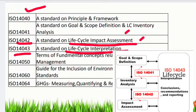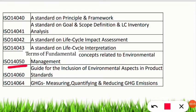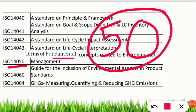ISO 14050 covers terms of fundamental concepts related to environmental management. To remember: 'Fundamental' — the first alphabet F stands for five. Then 'un-da' means under, which represents zero. So F gives five, and 'under' gives zero — together: 50. Therefore, ISO 14050 is for terms and fundamental concepts in environmental management.